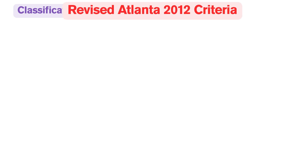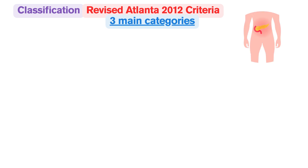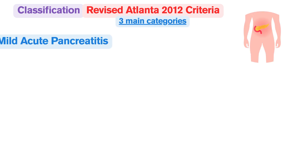To understand acute pancreatitis, it is crucial to classify it correctly. Current guidelines, such as those from the American College of Gastroenterology, have specific criteria. According to the revised Atlanta 2012 criteria, acute pancreatitis is divided into three main categories.